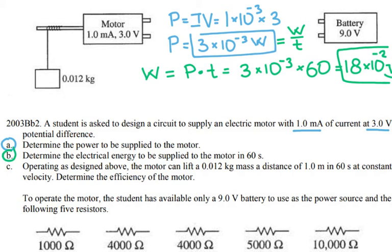For the next question, they say that operating as designed above, the motor can lift 0.012 kilogram mass a distance of 1 meter in 60 seconds at constant velocity. Determine the efficiency of this motor.